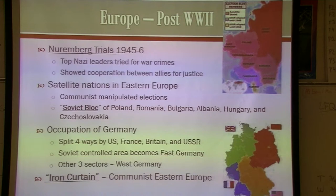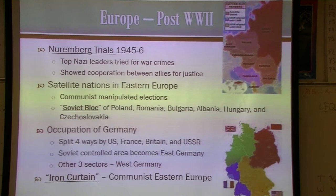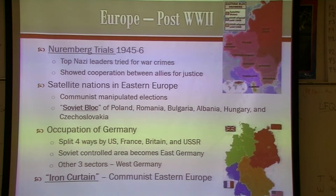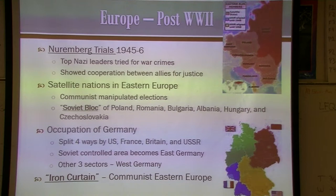Germany was split up into four different occupied zones — the US, Britain, France, and the Soviet Union each had a section, and we also had a section in Berlin. The three Western occupied zones ultimately joined together to become West Germany. Inside Berlin, the three Western-occupied parts were considered part of West Germany even though they were completely surrounded by Soviet-controlled East Germany. East Germany became part of the Soviet satellite nations.